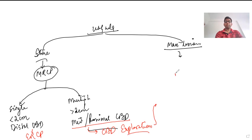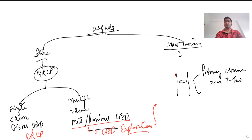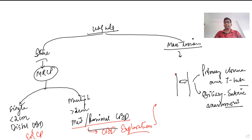After CBD exploration and stone extraction, there are two options. First, we can consider primary closure over a T-tube, placing the T-tube at the incision site. Second, we can go for a biliary enteric anastomosis — bringing a loop of bowel, either jejunum or duodenum, and performing a choledochojejunostomy, choledochoduodenostomy, or even a Roux-en-Y choledochojejunostomy. So these are the different options available when a stone is found in the common bile duct.